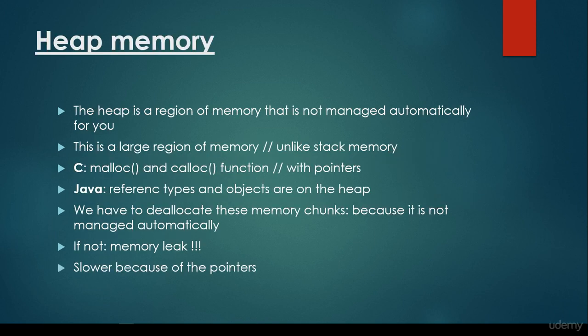What about the heap memory? The heap is a region of memory that is not managed automatically for you. It is in the Random Access Memory as well. It's very important that this is a large region of memory, unlike stack memory. In C, for example, we have to use the malloc and the calloc function with the help of pointers to be able to allocate some space on the heap memory.